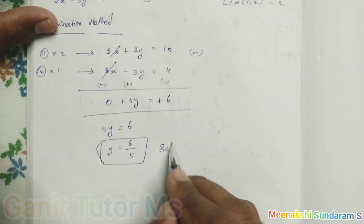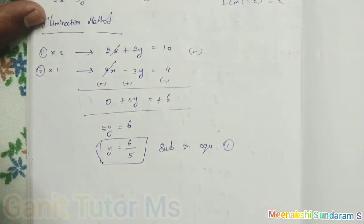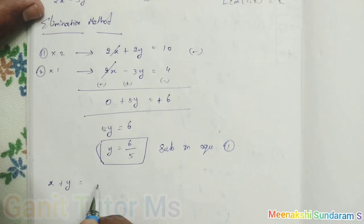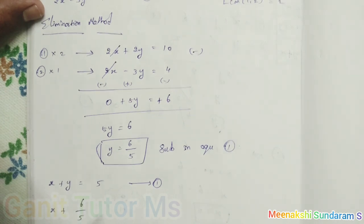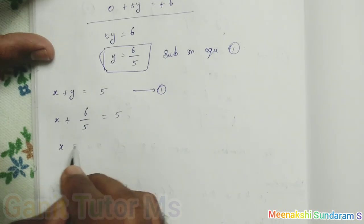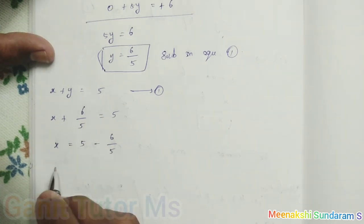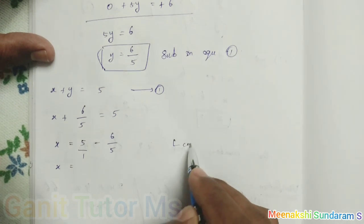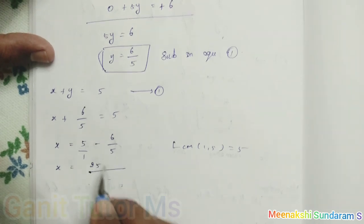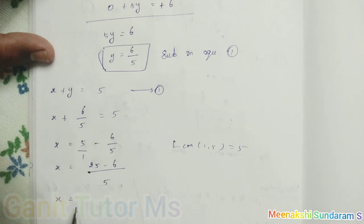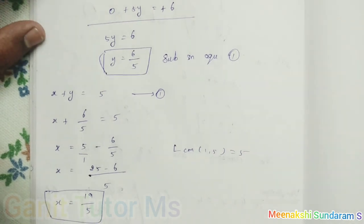Now we have found the y value. We can substitute this y into any equation; I simply take equation number 1. Substituting in equation number 1: x plus y equals 5, so x plus 6 by 5 equals 5. Therefore x equals 5 minus 6 by 5. Taking LCM of 1 and 5, which is 5: x equals 25 by 5 minus 6 by 5, which equals 19 by 5. Now we have found both the x and y values.